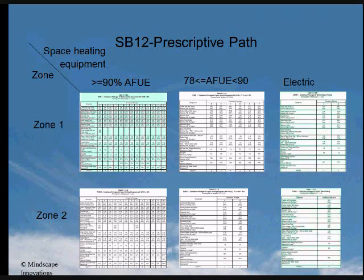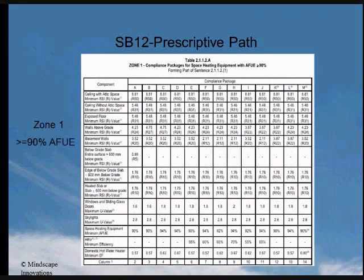Having picked one table to go through, for an example I will cover table 2.1.1.2.a, with the understanding that the same basic premise is used for all the tables. If the home that we are planning on building is in an area that sees less than 5,000 heating degree days a year, it is in Zone 1. And if the space heating system efficiency is greater than 90% AFUE, then table 2.1.1.2.a should be used, which we will now focus on.